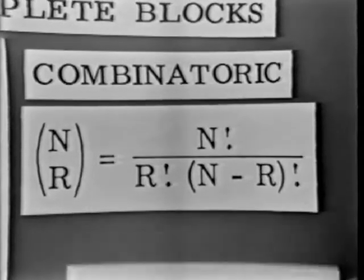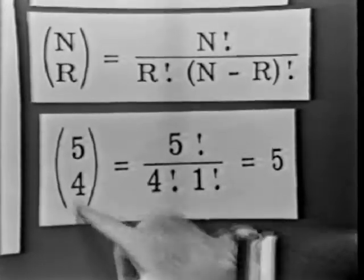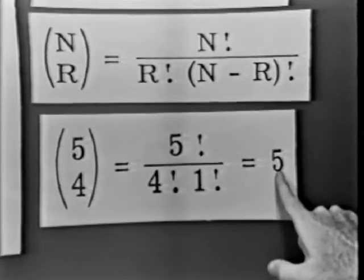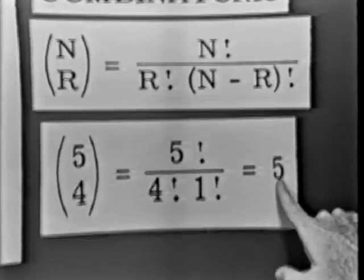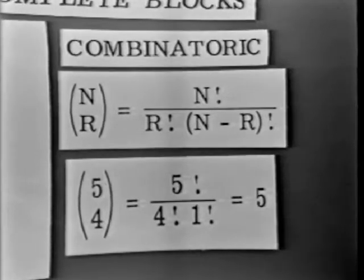For example, what would 5c4 be? What's the number of combinations of five things taken four at a time? It would be 5 factorial over 4 factorial times 1 factorial, or altogether five combinations of five things taken four at a time.